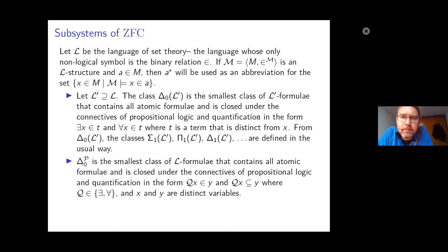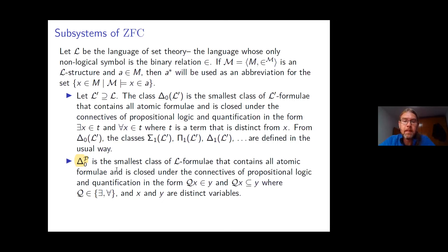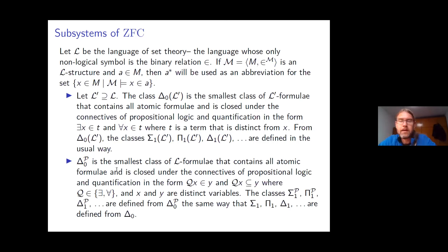I also want to consider the Takahashi classes. The bounded-in-subset formulae, or Δ₀ᴾ formulae, form the smallest class containing all atomic formulae, closed under propositional connectives, and closed under bounded quantification where quantifiers can be bounded both by the membership relation and by the subset relation. From the Δ₀ᴾ formulae we define Σ₁ᴾ, Π₁ᴾ, and Δ₁ᴾ in the usual way.